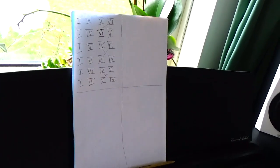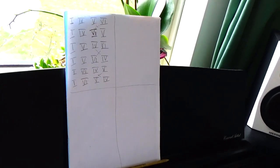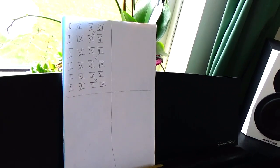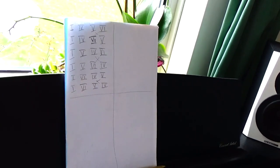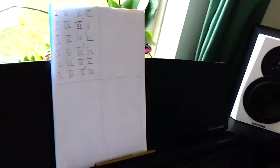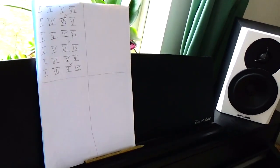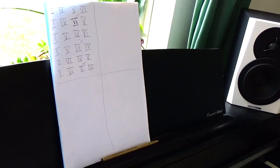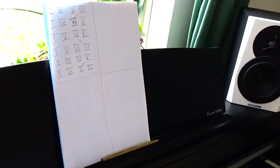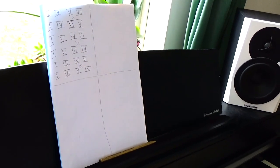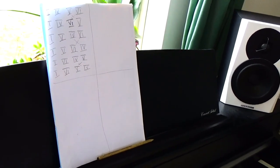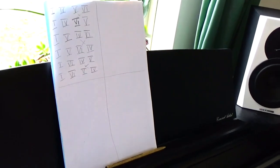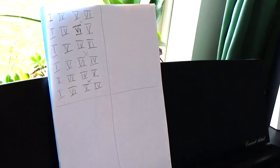We have learned that when we jump a 4th or 5th we have just one note in common. We have learned that when we jump a 3rd, either down or up, we have two notes in common. When we move to the consecutive note — the interval of a 2nd, either up or down — the two chords have nothing in common.